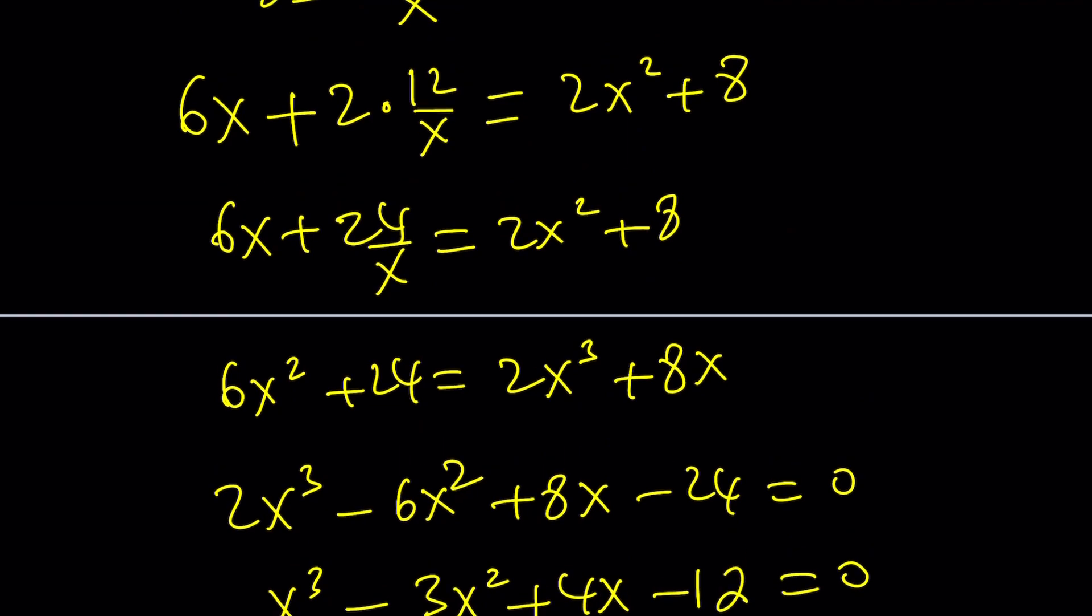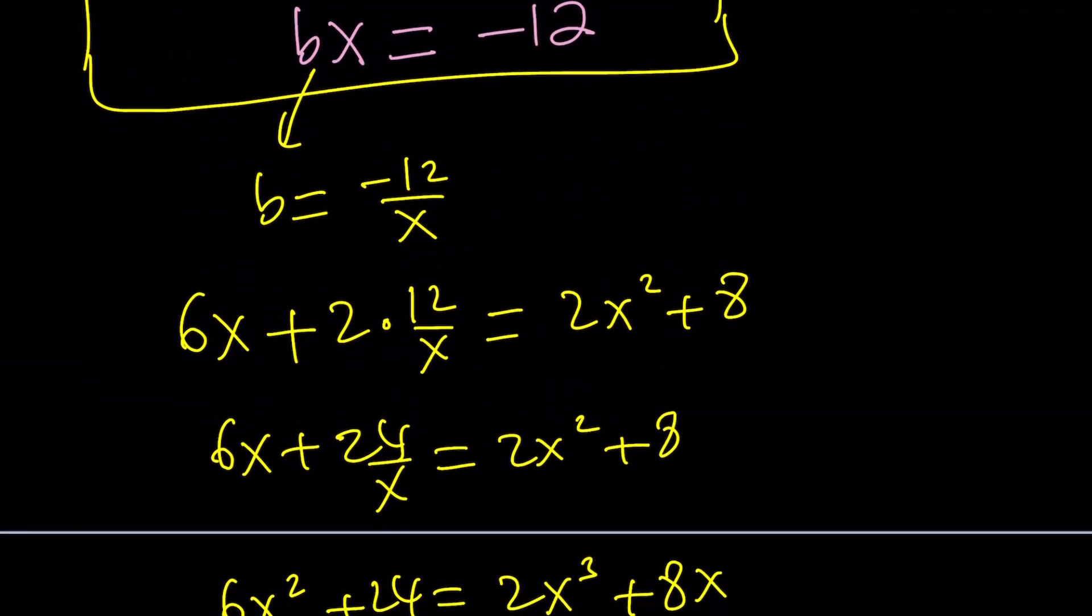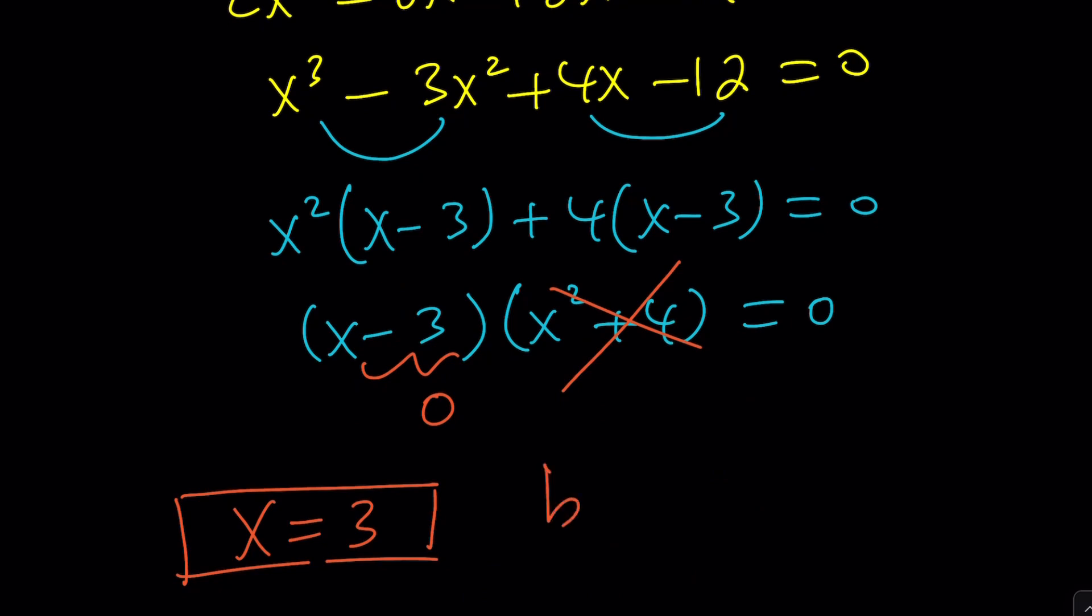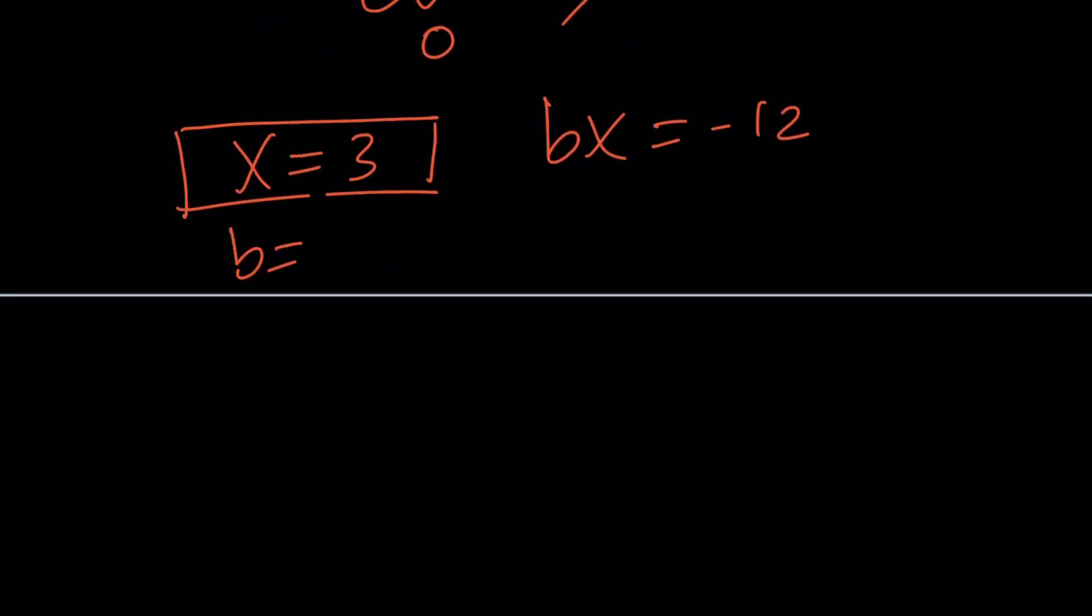It has a unique solution. Let's see if we can find b from here. If bx is negative 12 and x is 3, then b must be negative 4. Easy, right? Once you find x, b is easy.